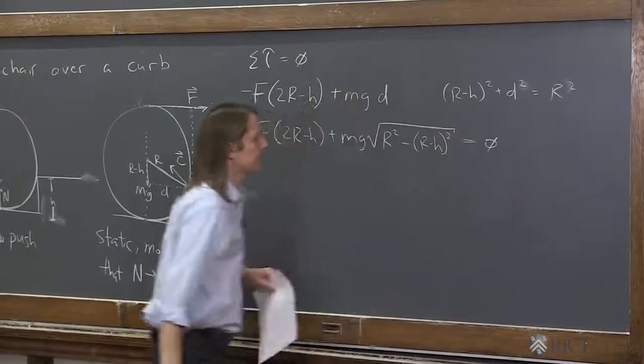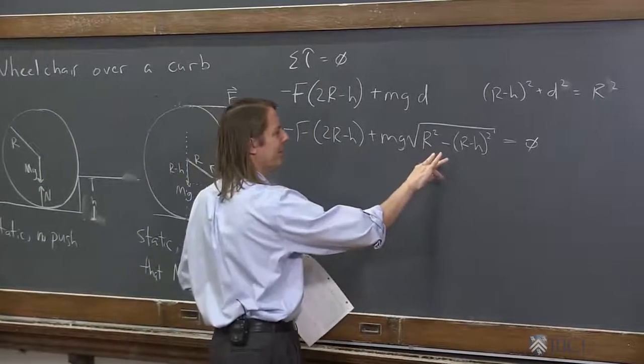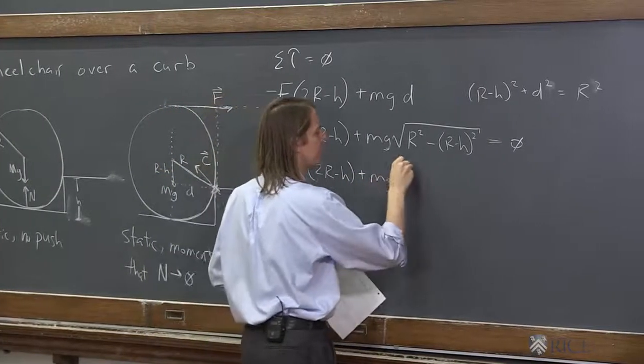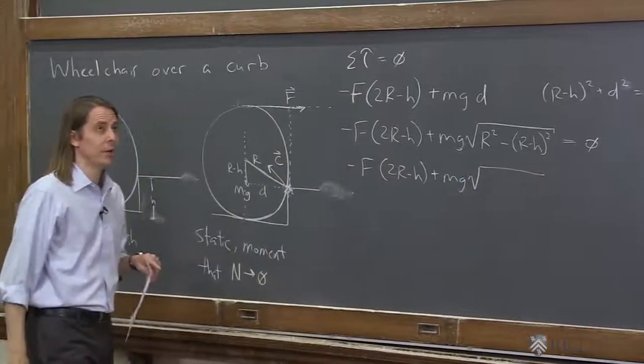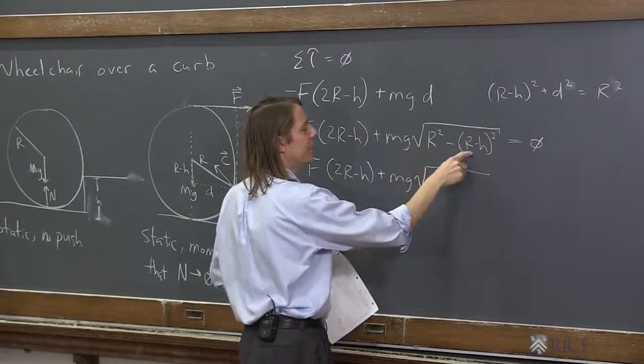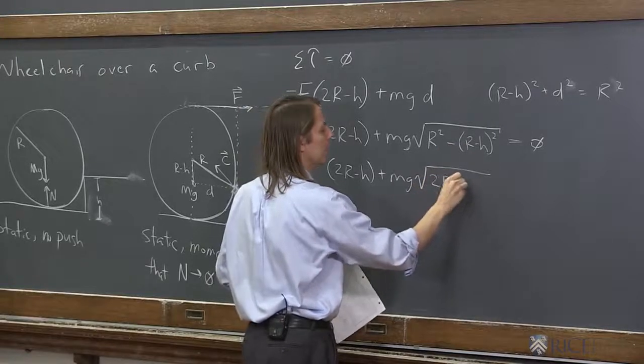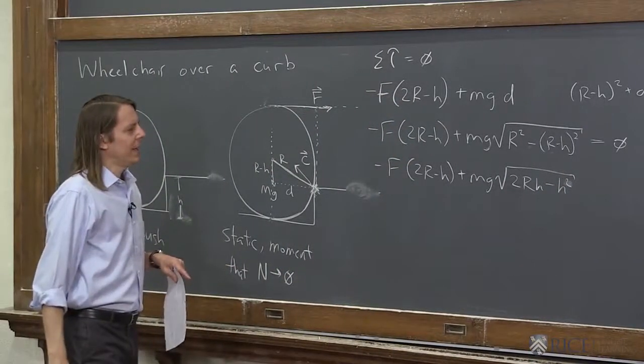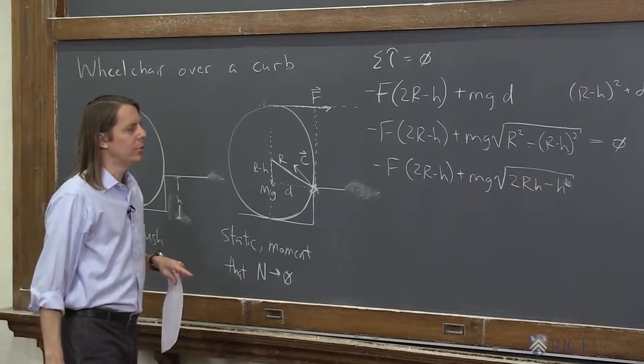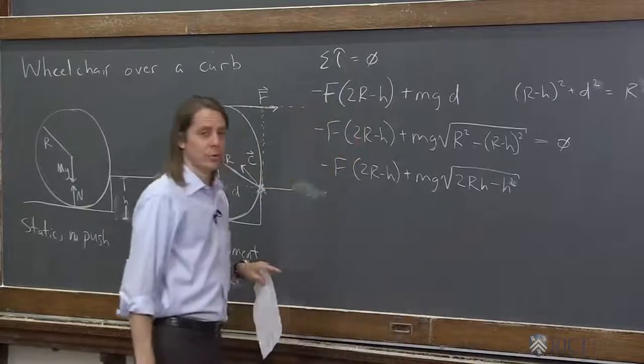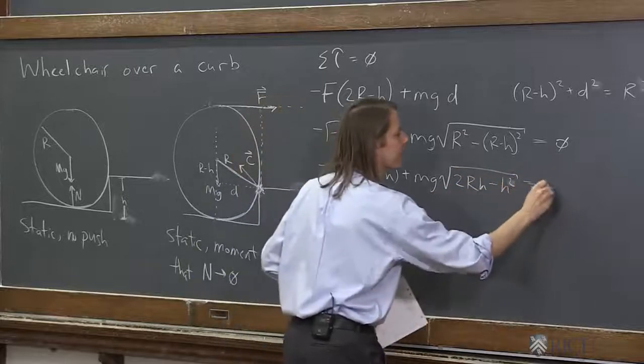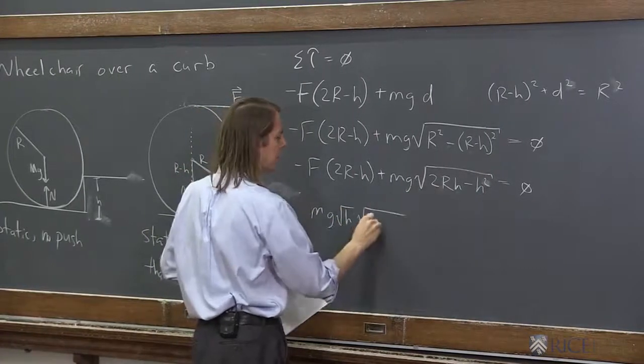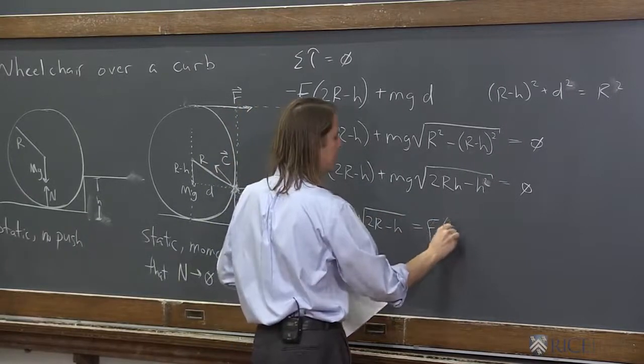This all has to equal zero. So minus F times 2R minus h plus mg times the square root, and if we foil that out, we're going to get R squared minus 2Rh plus h squared, and that first R squared will cancel. So it's 2Rh minus h squared, because that negative sign there is what you're left with. And then you could, if you're daring, you could pull an h out of here, and I know it's not squared, but you could still do it. And we could also go ahead and move this to the other side and set them equal to each other since it equals zero. So let's do that. mg times the square root of h times the square root of 2R minus h equals F times 2R minus h.